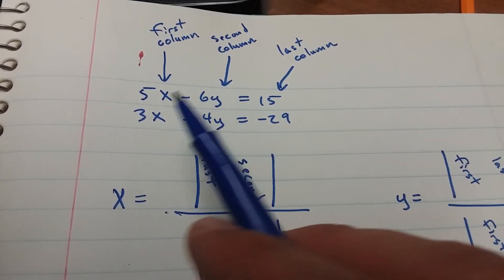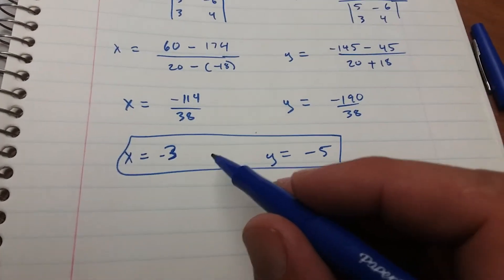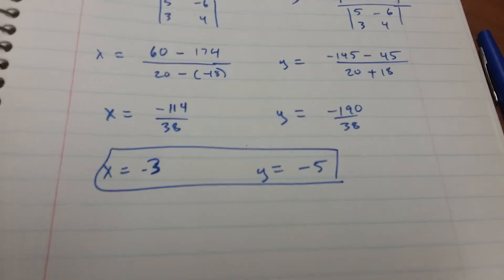If you put these two equations in on Desmos, you would find that these two lines intersect at the point negative 3, negative 5.